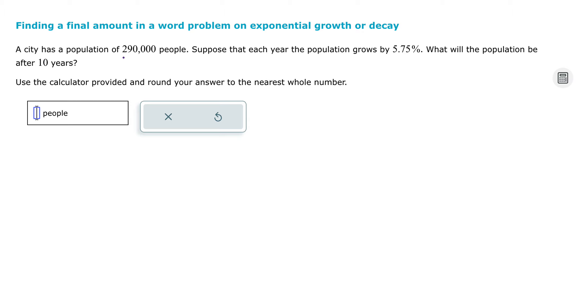So we have a city that has a population of 290,000 people. The population grows by 5.75%. What will the population be after 10 years? They're going to give us the calculator, or you can use your own calculator. Round your answer to the nearest whole number.